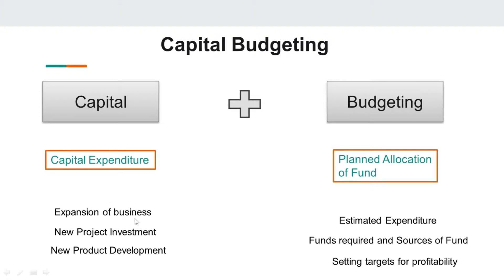The reasons could be expansion of business, a new project investment, new product development, and many such reasons involving huge cost. Now when we talk about budgeting, what does a budget mean? You prepare a budget which is a planned allocation of funds. You make estimations regarding the expenditure to be incurred, and once you have decided on those expenditures, you allocate funds to meet them. If you are running short of funds, you try to raise finance from any source.